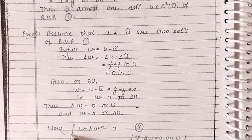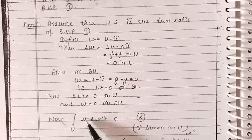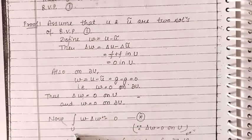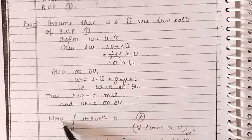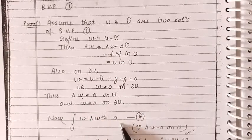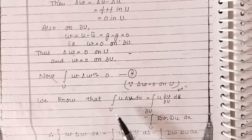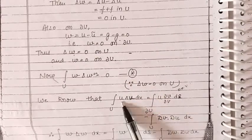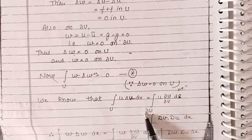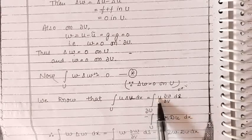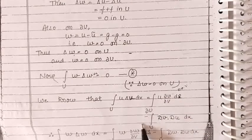Now if we consider the integral of w times Laplacian of w over the set u, then because Laplacian of w is 0 in the set u, this integral becomes 0. Now let us apply Green's formula. According to Green's formula, the integral of u times Laplacian of v over the set u is given by the integral over the boundary of u of u times ∂v/∂n, minus the integral over the set u of ∇v · ∇u.